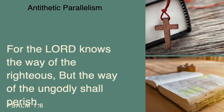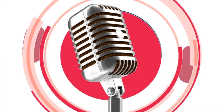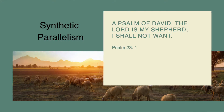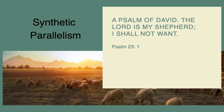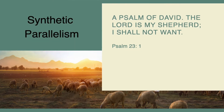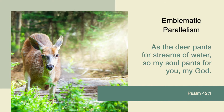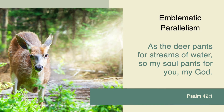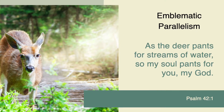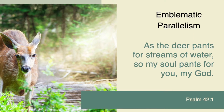Antithetic parallelism contrasts two things, laying them beside each other. Then there's synthetic parallelism, where the second line builds upon the first — like 'The Lord is my shepherd, I shall not want,' from Psalm 23. And then there's emblematic parallelism, where the first line illustrates the second — for example: 'As the deer pants after the water brooks, so pants my soul after you, O God.' So a simple definition of parallelism would be: it's a poetic expression that uses metaphor, simile, and juxtaposition to communicate a deeper truth.